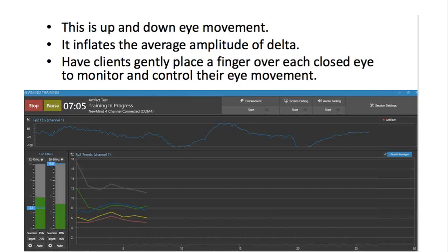This is up and down eye movement. It'll inflate the average amplitude of the delta. It'll get your artifact light going off. When that artifact light goes on, the EEG gets dumped. It doesn't get into the trend screen very much. It will stop your clock if you're training somebody. When you have people looking up and down like that, that's a major delta artifact. That's why we ask them to watch the screen with something interesting, just stare at the screen, so we can get minimal eye movement.